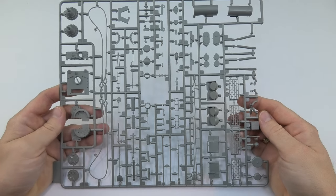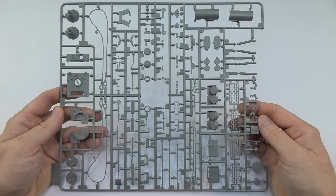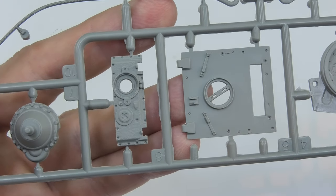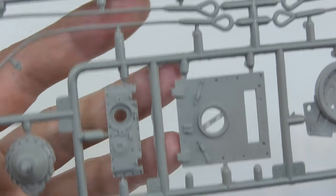Another sprue consists of the parts of the hull, lots of elements, but contrary to appearances they are built quickly. Engine hatch, towing cables which will be turned into metal anyway, tools, driver's and radio operator's hatch covers, fenders.